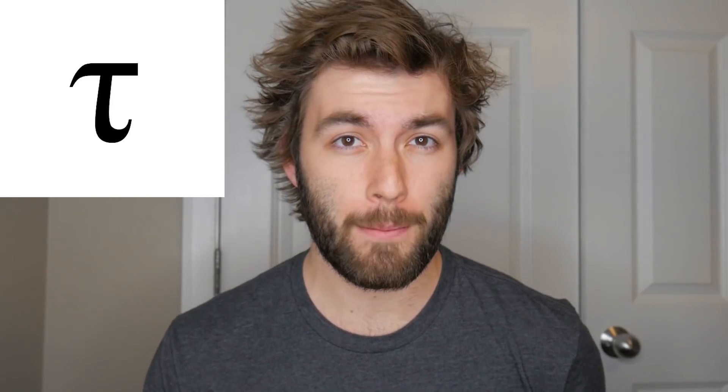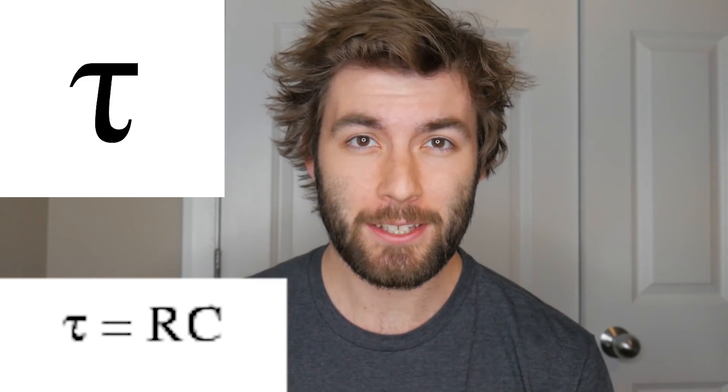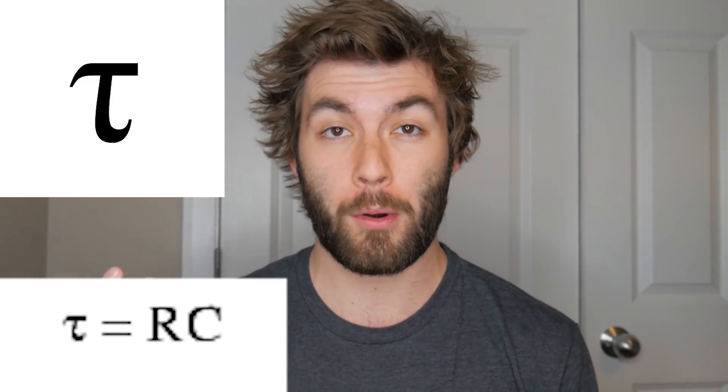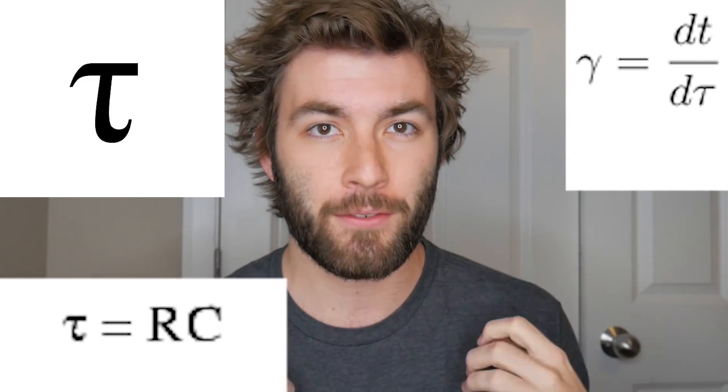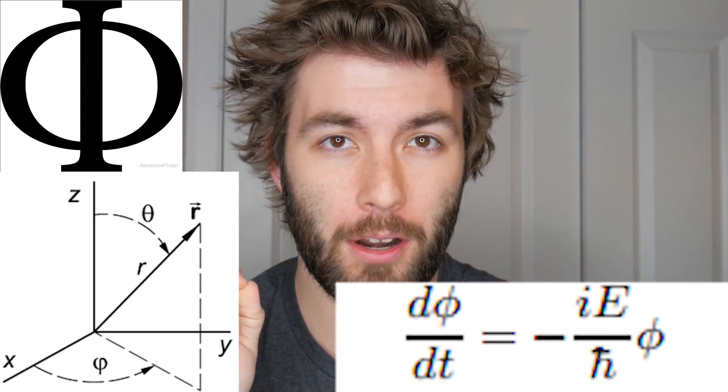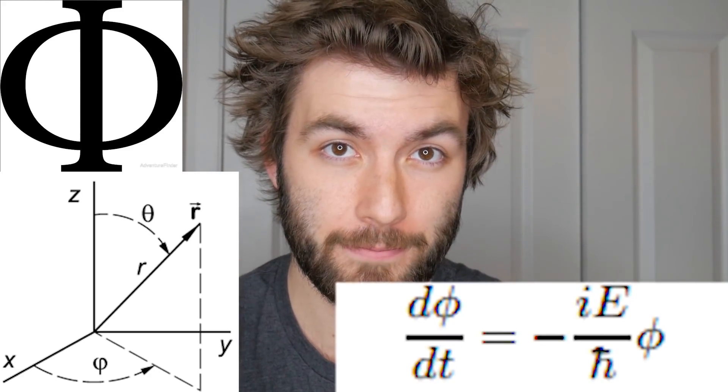On to lowercase tau. Lowercase tau is a time constant used to parameterize RC circuits. It's also sometimes used as the parameter for proper time in relativity, meaning the clock ticking in that reference frame that's traveling.